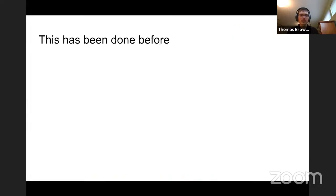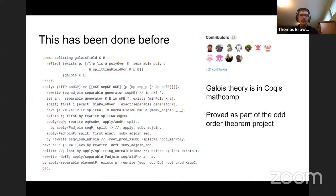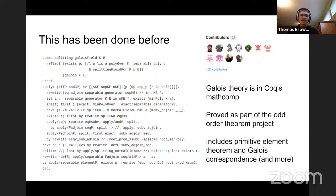We should mention that all this has been done before — in particular, it's been done in Coq. Here's the code in Coq for the fact that the splitting field is Galois, all in Coq's MathComp. The reason it's there is because this sort of thing was needed for the project formalizing the odd order theorem. This includes basically everything we've done: the primitive element theorem, the Galois correspondence, and a few other things.